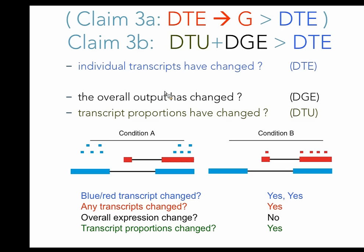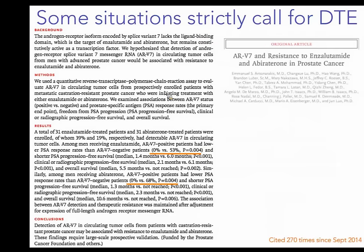That said, there are situations where we specifically want to do transcript-level differential expression analysis. For example, there's a paper about a very specific isoform in prostate cancer — the AR-V7 isoform — that is very predictive of response to treatment. The presence or absence of this specific isoform is highly predictive of patient response. This is a good example where you'd want to do a very specific analysis on particular transcript variants, though I'd still question whether you'd want to do this on a genome-wide scale.